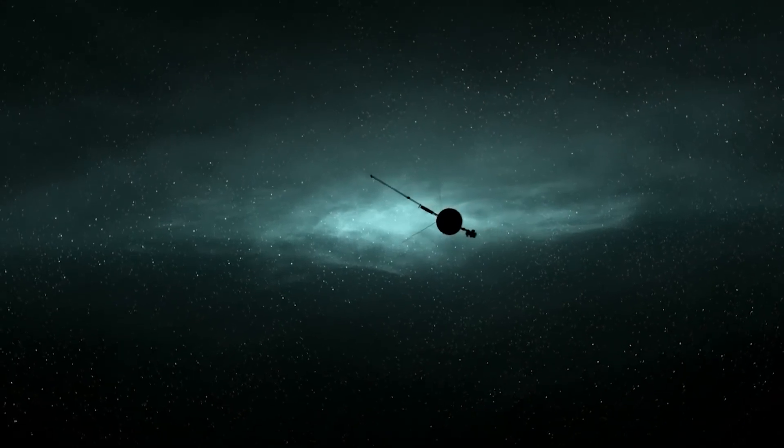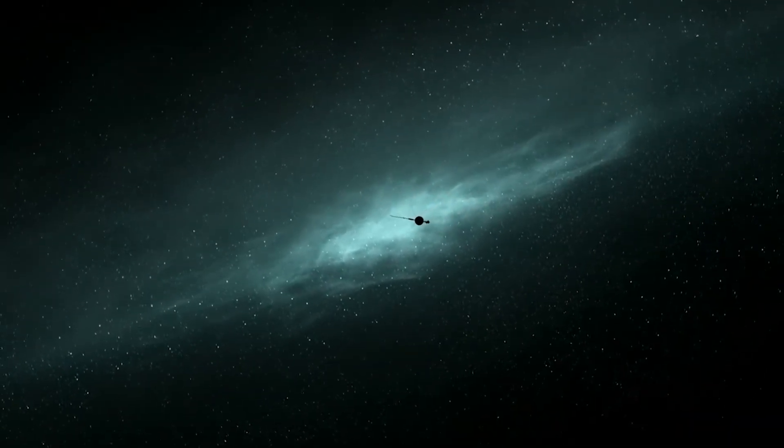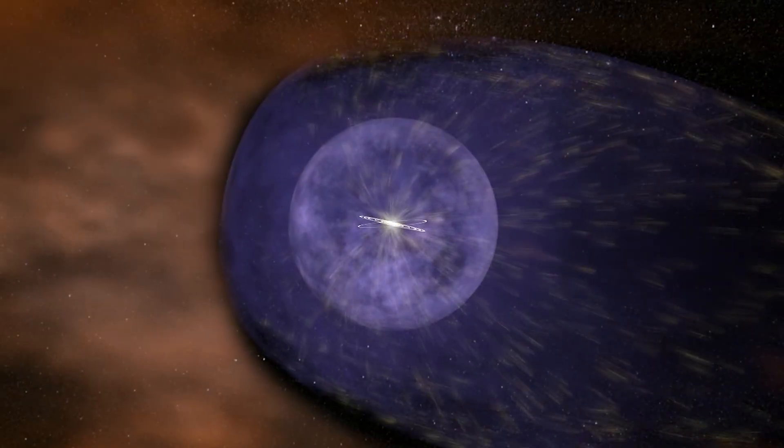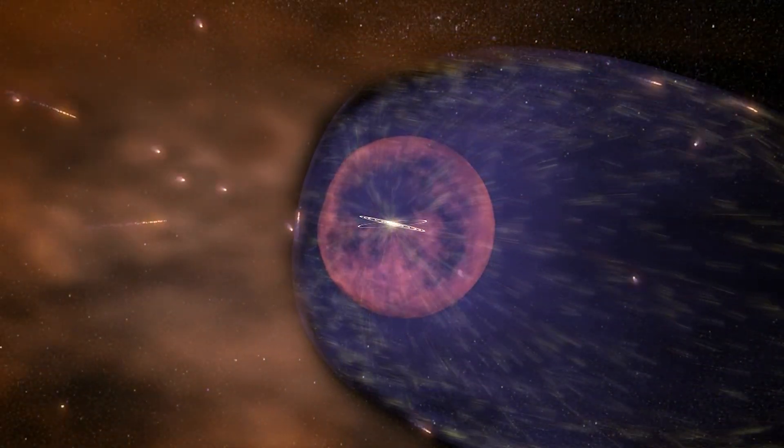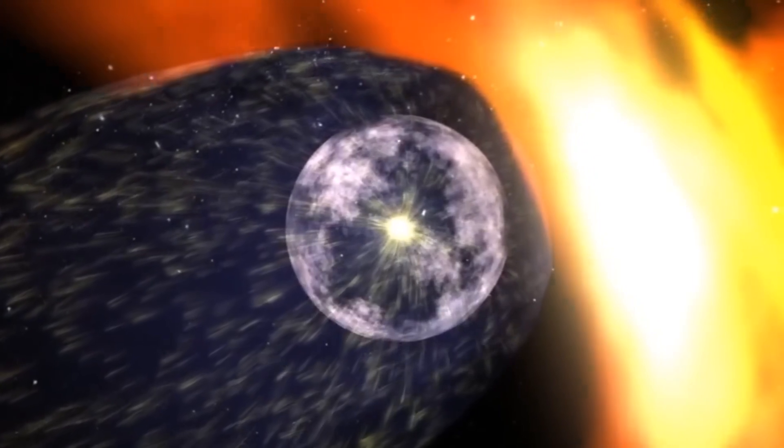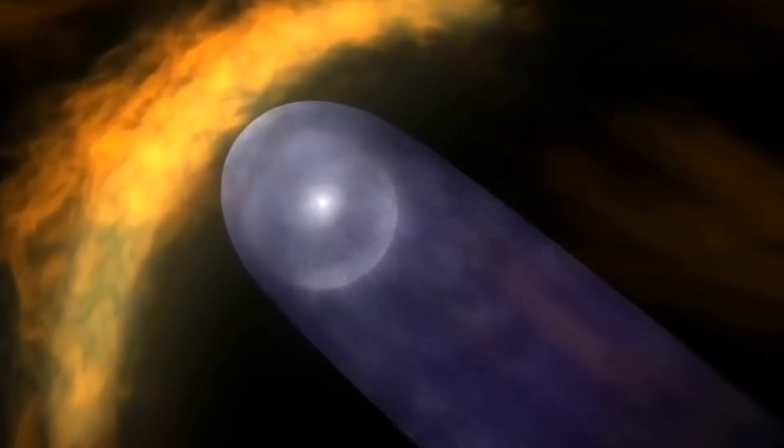In 2012, Voyager 1 achieved a historic milestone. It crossed the Heliopause, the boundary where the sun's influence ends and interstellar space begins. It became our first interstellar ambassador, venturing into a realm where no spacecraft had gone before.